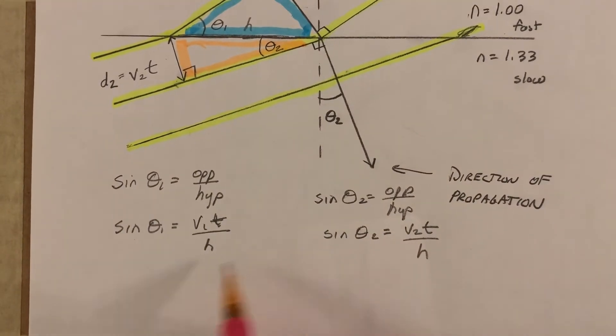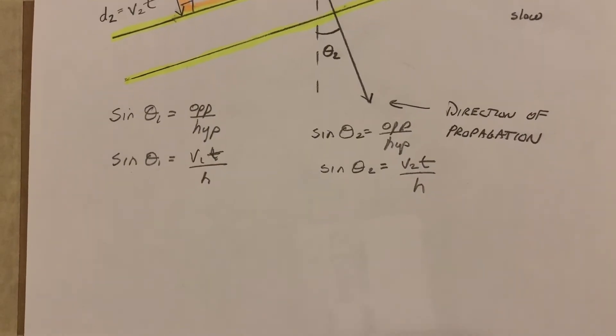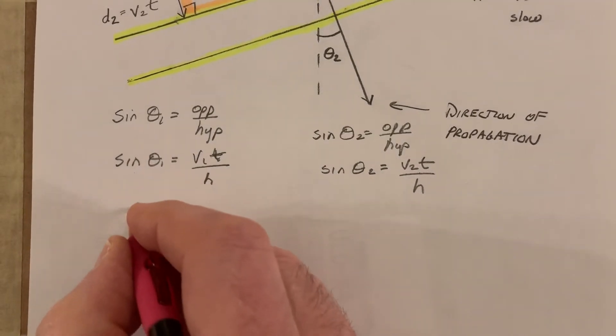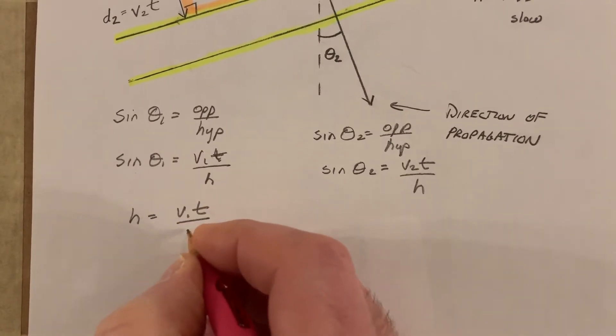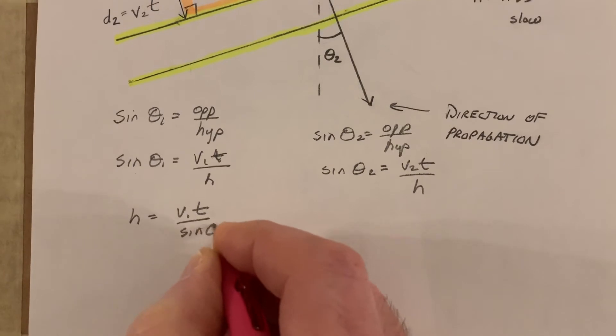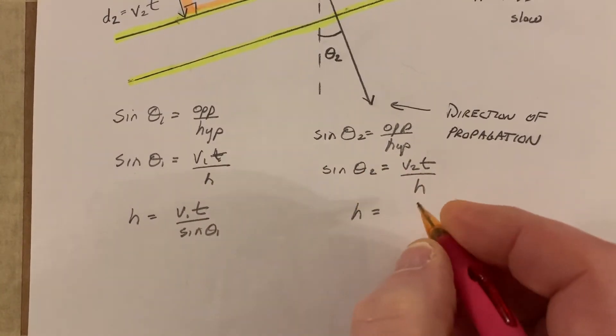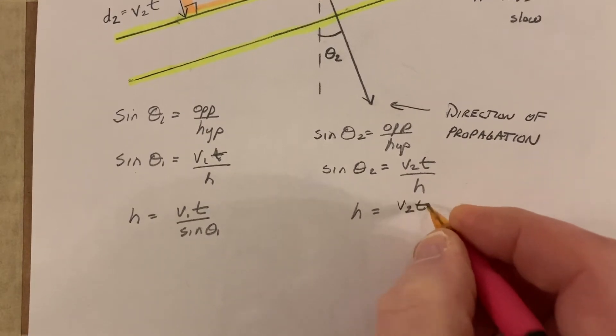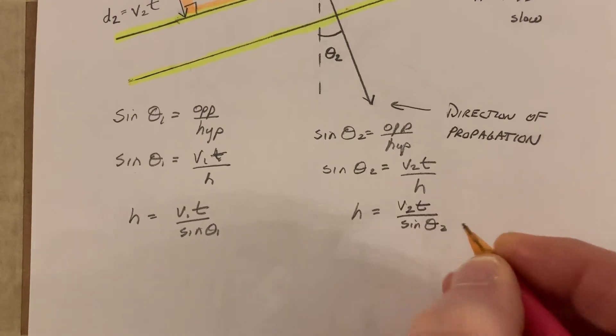Now, in both these cases, h is going to be the same. So let's rearrange these. h is equal to velocity 1 times time over sine theta 1, and h is equal to velocity 2 times time over sine theta 2.